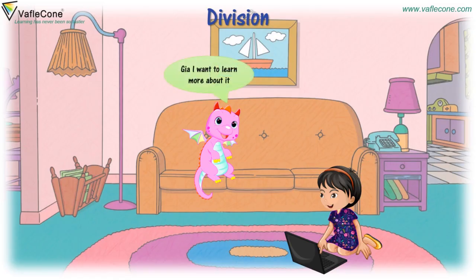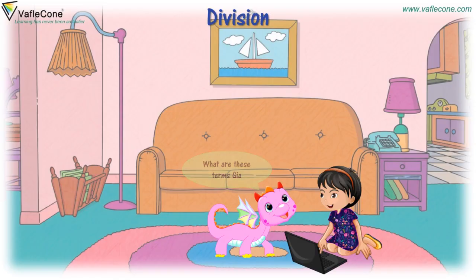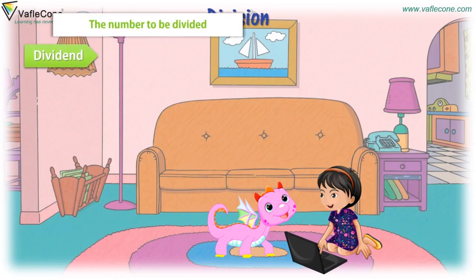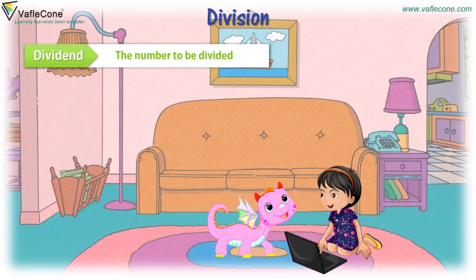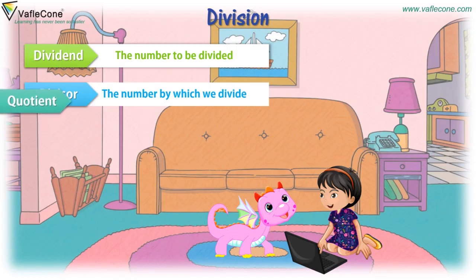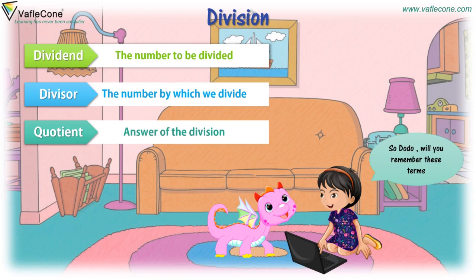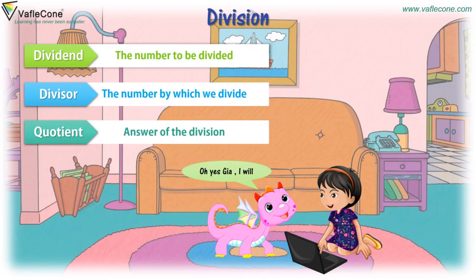Jia, I want to learn more about it. Doodoo, for doing division, you need to learn a few terms. What are these terms, Jia? Dividend — the number to be divided. Divisor — the number by which we divide. Quotient — the answer of the division. So, Doodoo, will you remember these terms? Oh yes, Jia, I will.